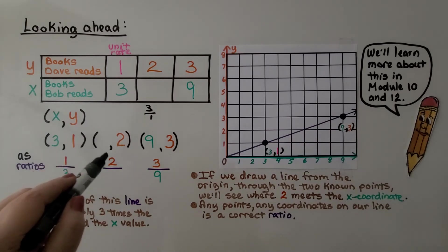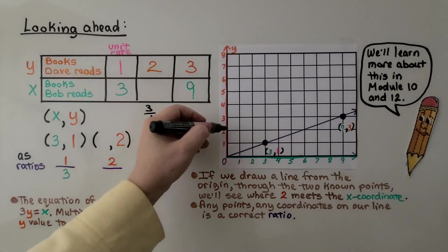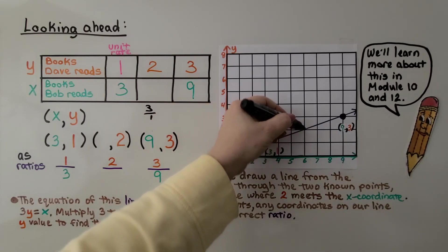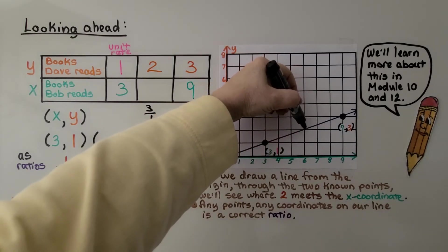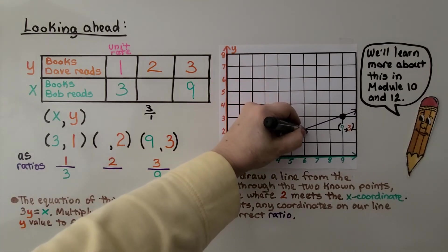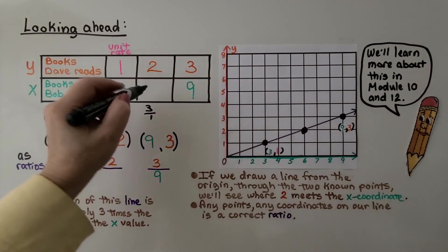We can look at where 2 is for the y, which is right here. And we follow it to our line to find out where it meets the line. It meets at 6. So we would actually know to put a 6 here.